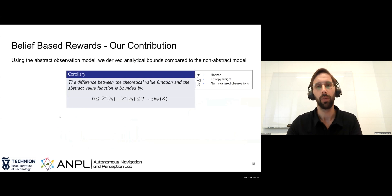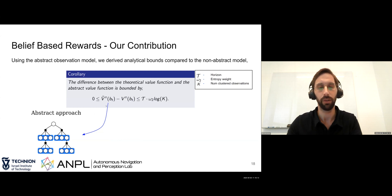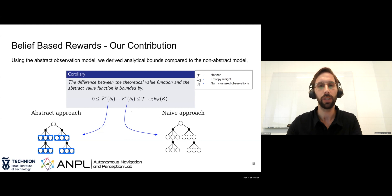Using this abstract observation model, we derived analytical bounds comparing the abstract model to the non-abstract model — bounding the difference between the theoretical value function and the abstract value function. Looking at this inequality: the first part is the simplified (abstract) value function, and the second part represents the naive approach. We don't compute the naive approach; we calculate the simplified value function, which is easier to compute, and use it as a proxy to bound the theoretical value function we don't have access to. Here, D denotes the horizon, ω₂ is the entropy weight, and k is the number of clustered observations.